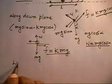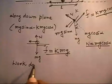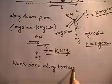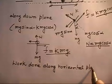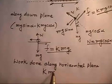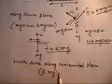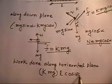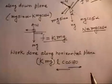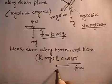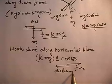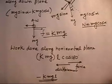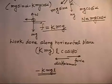The work done along the horizontal plane is force times displacement times cos(180°), which gives W2 = −k·mg·L. This is the work done by friction on the horizontal surface.